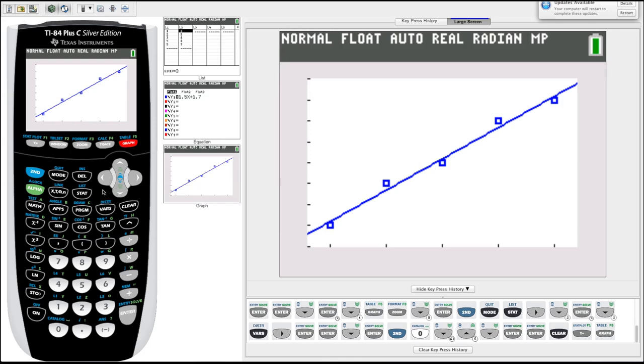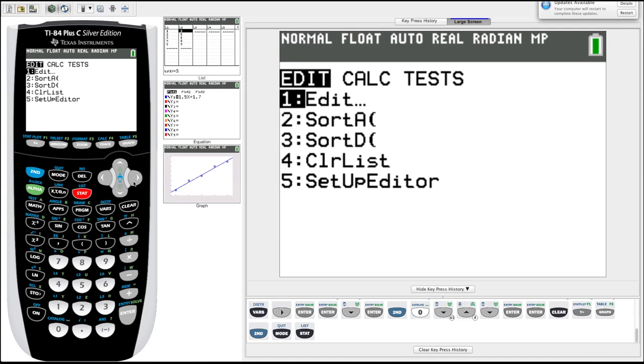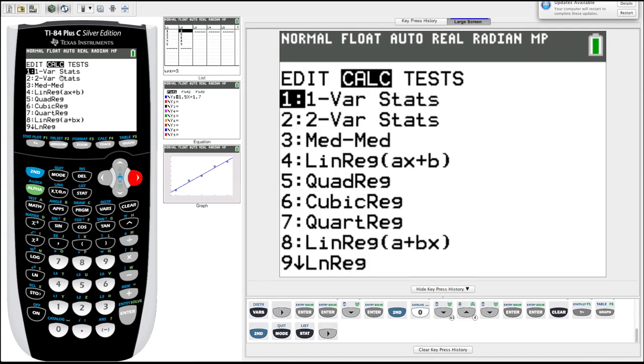The last thing we're going to do is we're going to go through how to find some statistics like mean, median, standard deviation, variance. The calculator can all do that for you for your data. So let's quit back to the home screen, second quit. We go into stat again. Big surprise. This is our statistics menu. We're going to again go over to calc and we can go to one var stats, one variable statistics.